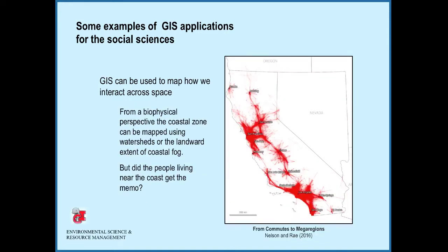GIS can also be used to better understand how we interact across space. From a biophysical perspective, the southern California coastal zone can be mapped using watersheds or the landward extent of coastal fog. This map of commuter flows indicates that people living near the coast ignore such boundaries as they routinely commute to and from more inland areas such as Lancaster and Palmdale, San Bernardino, and Palm Springs.